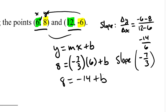And then I'm just going to add 14 to each side. And when I do that, I get that 22 is what b is. Now that I know that b is 22,